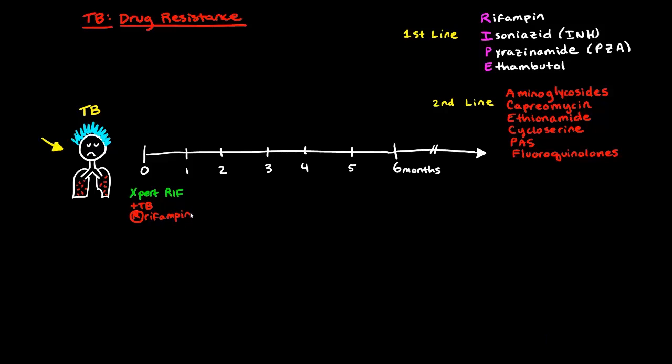But let's assume that the expert test is negative. We have a TB infection that we've diagnosed. We take cultures of the sputum, and we know that those cultures are going to come back in four weeks or six weeks. It takes a bit of time.